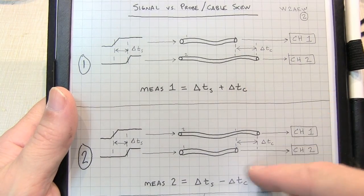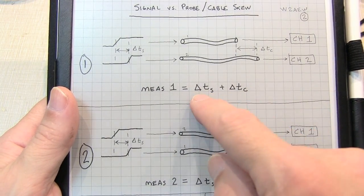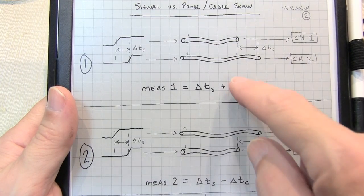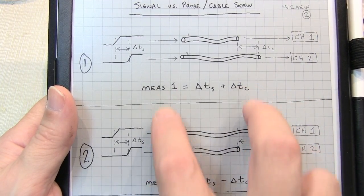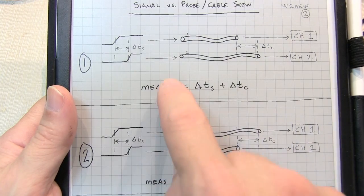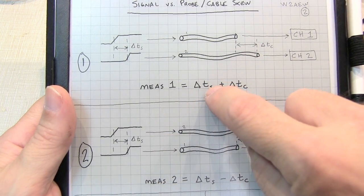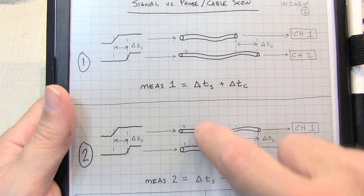Now, with these two measurements made, it's easy to separate out the signal skew and the cable skew. If we simply add these two equations to themselves, we'll wind up with measurement 1 plus measurement 2 equals the signal delay twice, and then these two terms cancel.